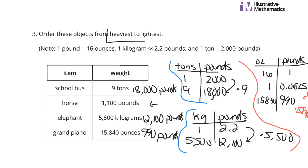And get something smaller, which is 990 pounds. And so we want heaviest to lightest. So heaviest is going to be one, then we'll have two, three, and four being our lightest. The heaviest is the school bus. Next up is the elephant, followed by the horse, and then the grand piano.